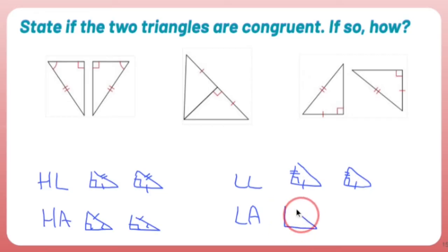And LA, which is a city in California, if I have two right triangles, and if I can show that one of my legs is congruent, and one of my angles is congruent, then that's enough information there.